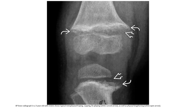AP knee radiographs in a 3-year-old with rickets show typical metaphyseal fraying, cupping, and splaying, as well as physeal lengthening.